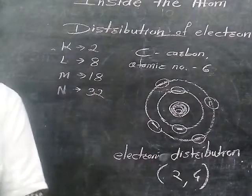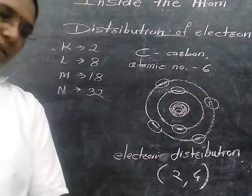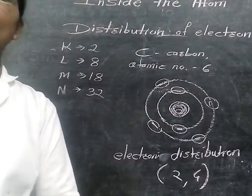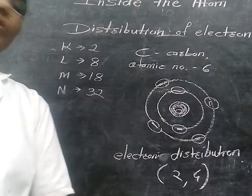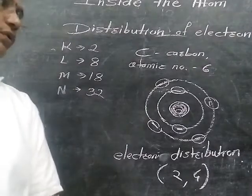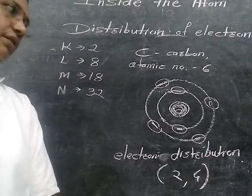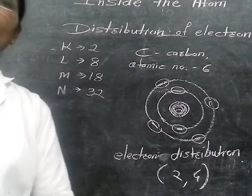Now, I give you some examples. Draw the electronic configuration for the given particular atoms and write the electron distribution in your notebook.